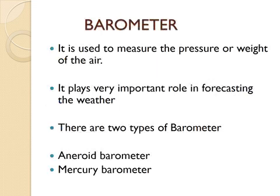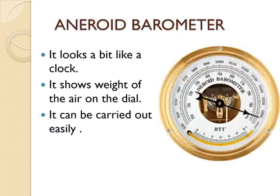Now it is the barometer. It is used to measure the pressure or weight of the air. It plays a very important role in forecasting the weather. There are two types of barometer: the aneroid barometer and the mercury barometer. The aneroid barometer looks a bit like a clock. It shows the weight of the air on a dial. It is portable — a small machine that can be carried anywhere — and the pressure reading is shown on the screen by a needle.